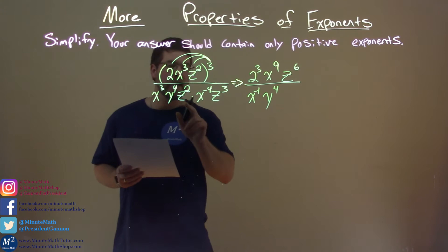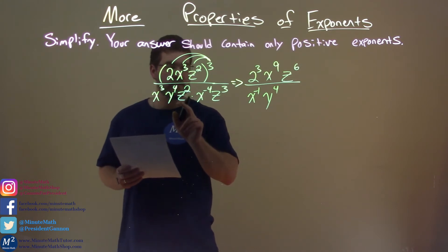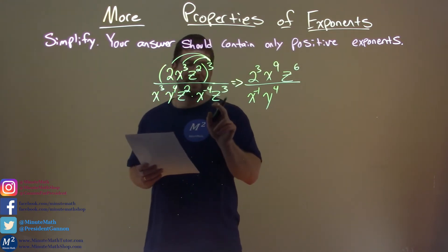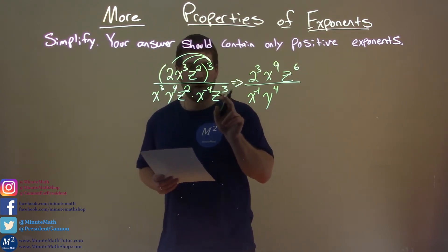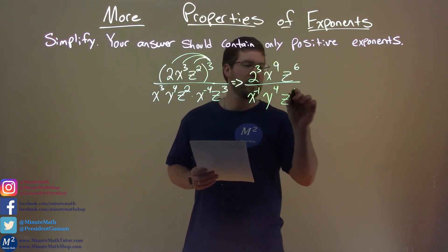Now time for the z's. Again, add the bases, z squared, or add the exponents, same base here. z squared times z to the third, 2 plus 3 is 5, so we have z to the fifth power.